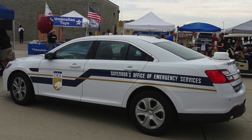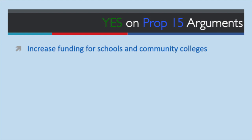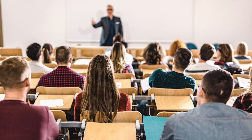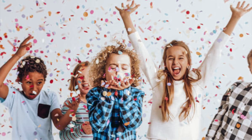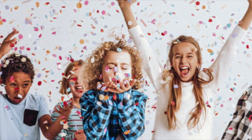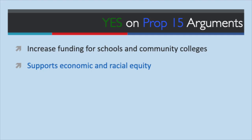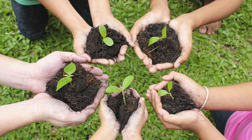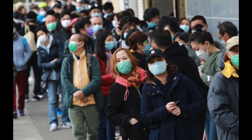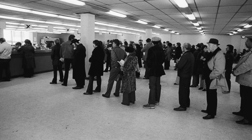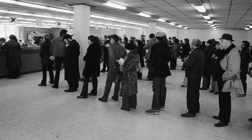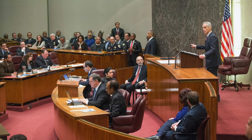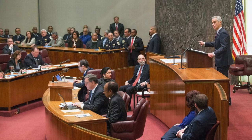Prop 15 rebalances the scales and increases funding for schools and community colleges. Every school district and community college will receive additional funding over and above existing funding guarantees, and Prop 15 funds go directly to education — state politicians can't take it away. Prop 15 makes sure schools with the greatest needs get the most help and gives local communities critically needed resources to deal with the unequal impacts of COVID-19, unemployment, and housing costs on communities of color.